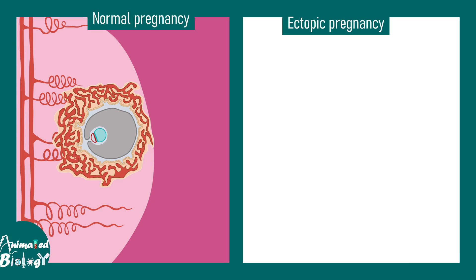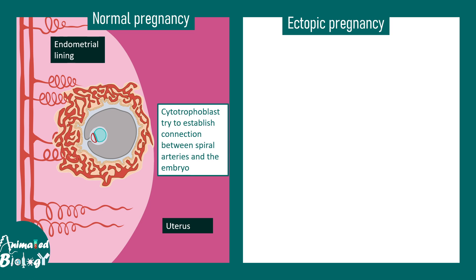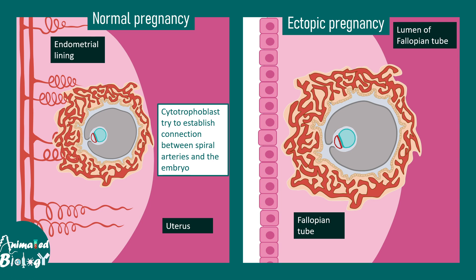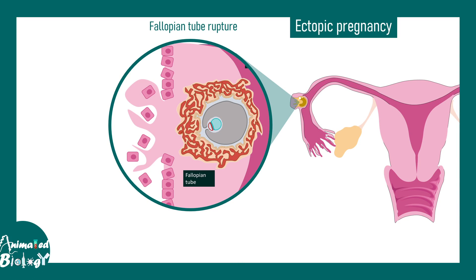In normal pregnancy, the implanted blastocyst establishes connection with the endometrial lining and ruptures the spiral arteries to establish blood connection and nutrient exchange. In the context of the fallopian tube, the cytotrophoblast tries to establish a similar connection, but there are no spiral arteries since it is not the endometrial lining. As a result, the fallopian tube epithelial cells are ruptured, leading to significant inflammation and blood loss with risk of further infection.